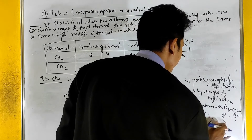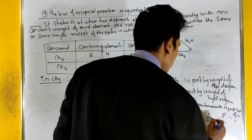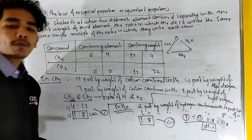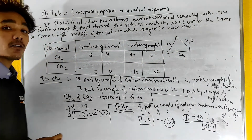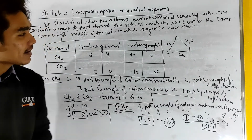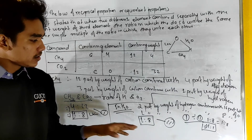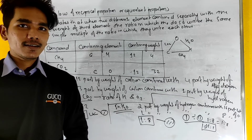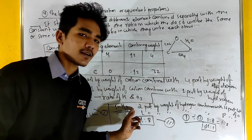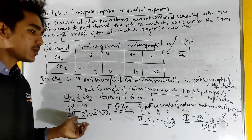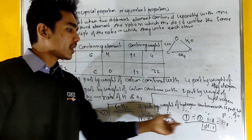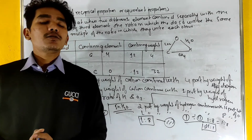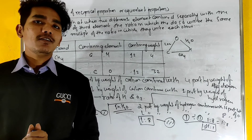So 1 is to 8 equals 1 is to 8 — a simple whole number ratio of 1 to 1. This satisfies the law of reciprocal proportions, illustrating that the ratio is indeed a simple whole number ratio.